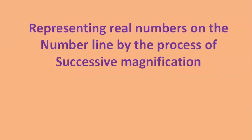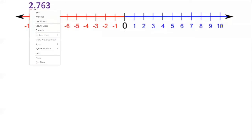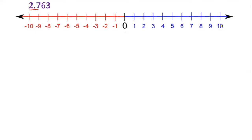Dear students, let us learn about representing real numbers on the number line by the process of successive magnification. Represent 2.763 on a number line. Draw a number line. After the decimal point there are three digits. Look at the first digit, that is 7, so take 2.7. It lies between 2 and 3.